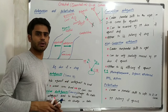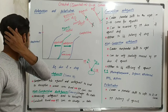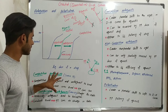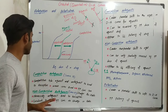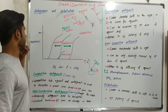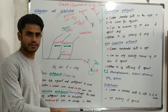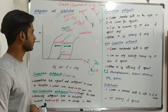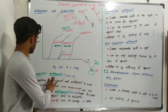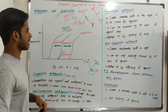We have briefly covered competitive antagonist and non-competitive antagonist, and also explained the terms potency, efficacy, affinity, antagonist, and agonist in a separate lecture whose link is given below. Now please come back to this lecture and we will move towards the graph again.